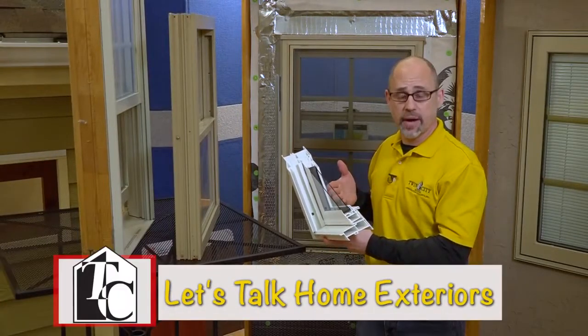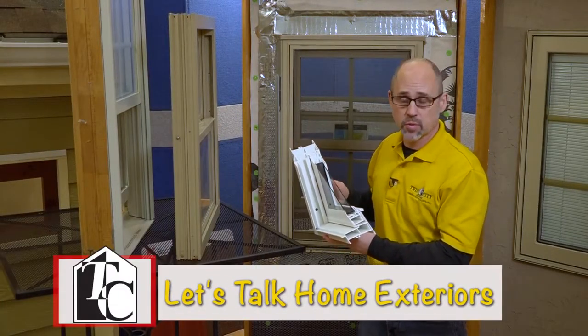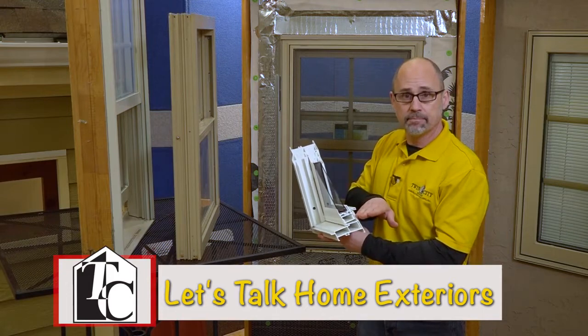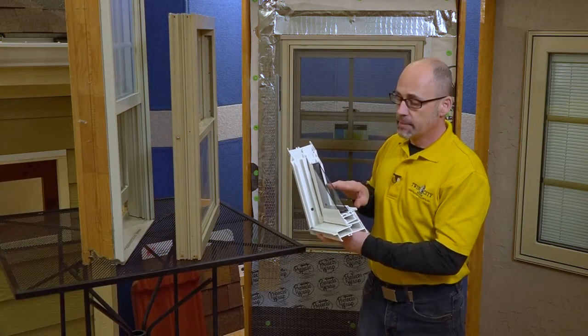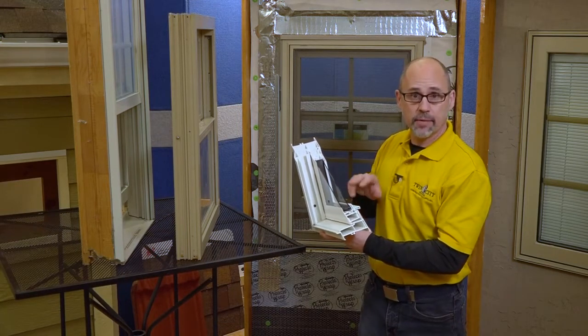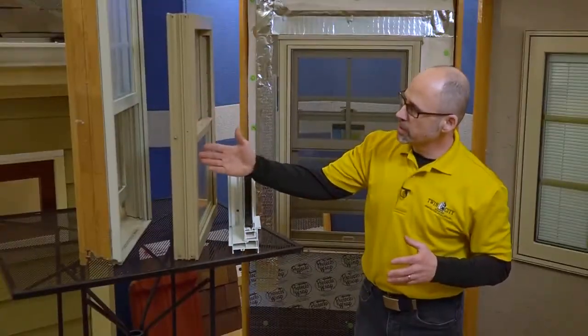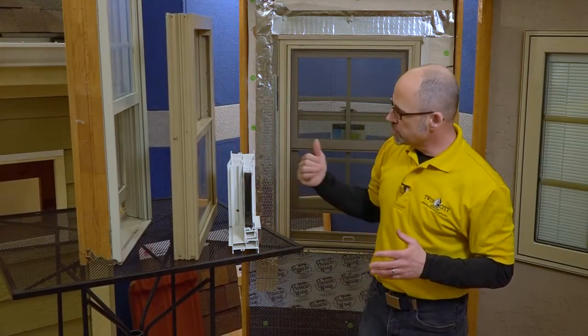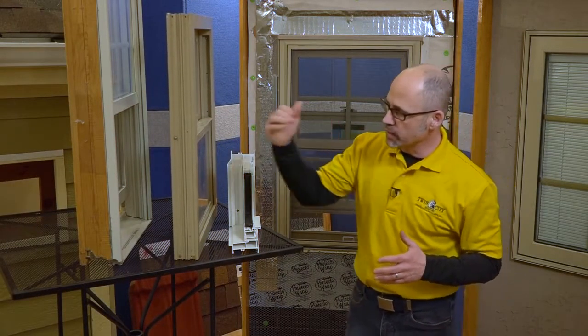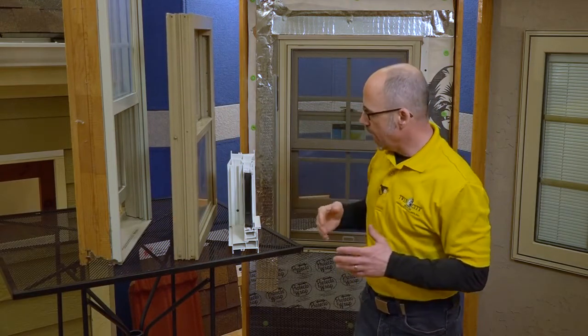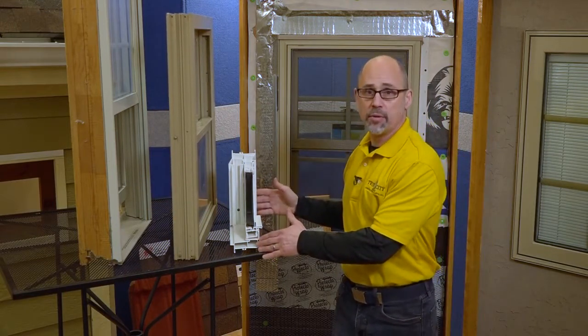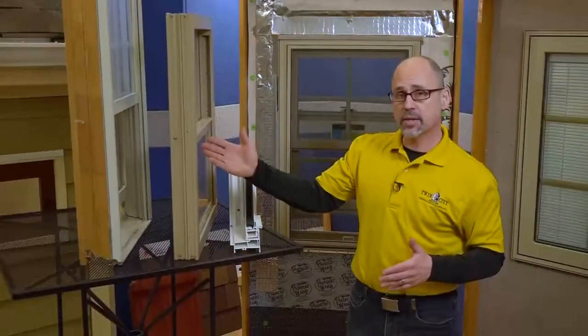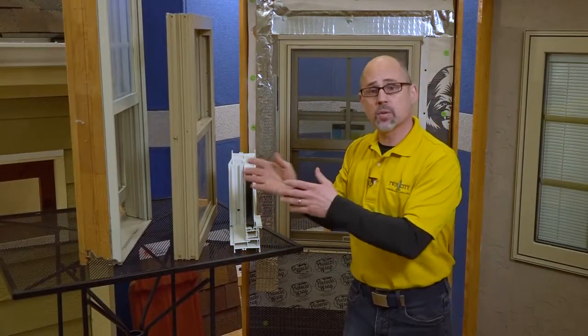So as we've covered the basics of this vinyl window and the other two windows as well, we have the frame, the glass pack, and the seal between the frame and the glass pack. Our middle window here, which is our composite window, helps to bridge the void between the historic traditional wood window and the emergence of vinyl windows about 30 years ago. We're seeing a strong trend towards composite windows.